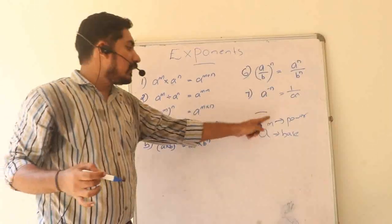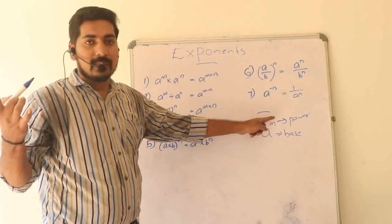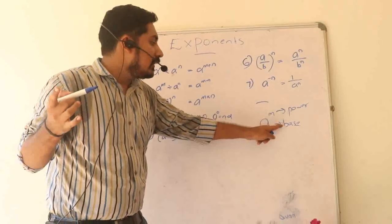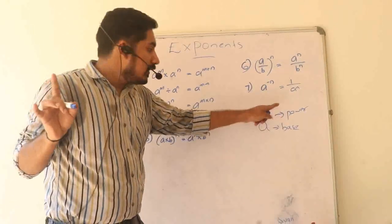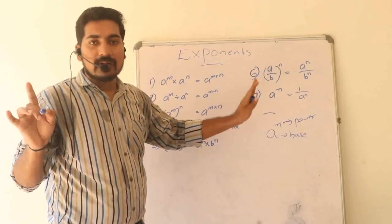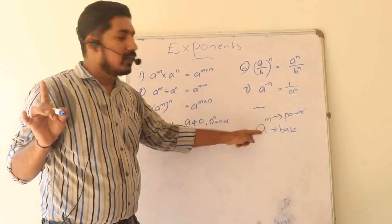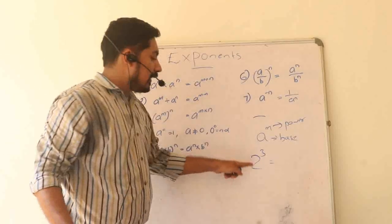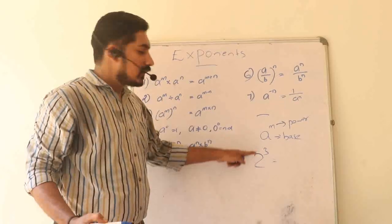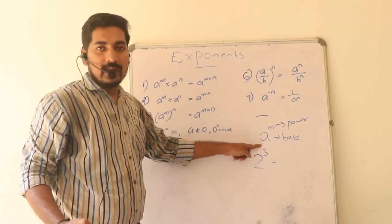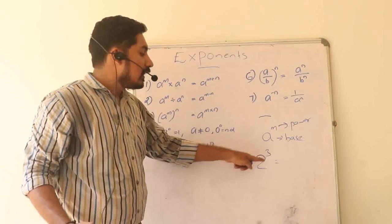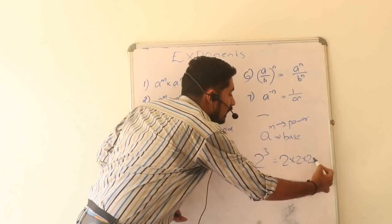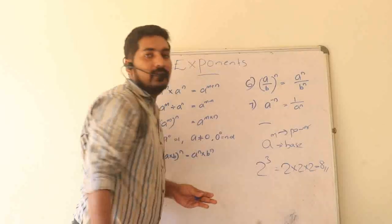This is the Krithiya. For example: 3 is the base in a raised to m. How does 2 raised to 3 work? 3 is the power. We multiply 2 three times: 2 into 2 into 2. That's why the answer is 8.